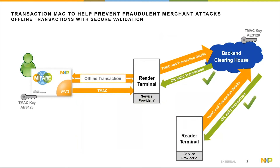In this slide you can see how the feature works in detail. The smart card — here in the example the MIFARE DESFire EV3 — can be used offline to execute any transaction between the reader terminal and the card. At the end of the executed transaction, the smart card itself calculates a Transaction MAC value using the pre-inserted Transaction MAC key. This Transaction MAC, also called TMac, is returned from the card to the reader terminal.